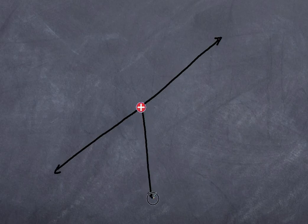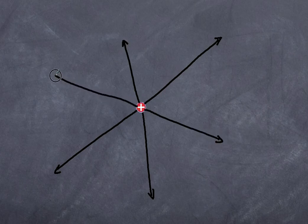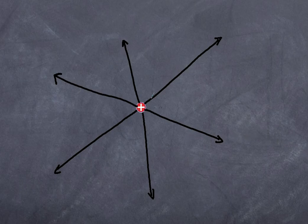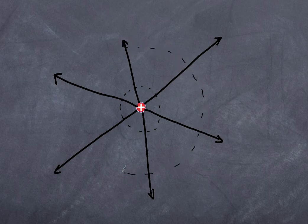These arrows represent the electric field and show the force a positive test charge would experience. Another key point: the further apart the lines are, the weaker the field. In this inner circle the lines are relatively close together, so the field is relatively strong. Further out, the lines are much further apart, indicating a much weaker field.